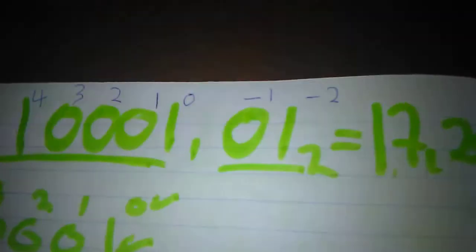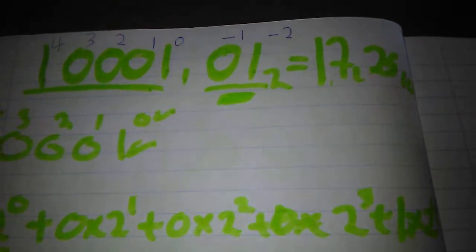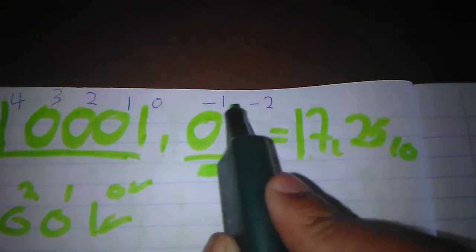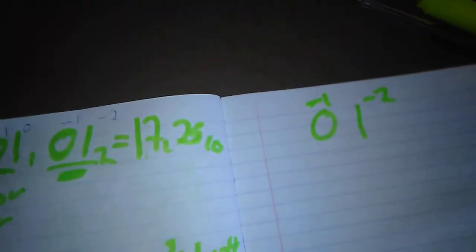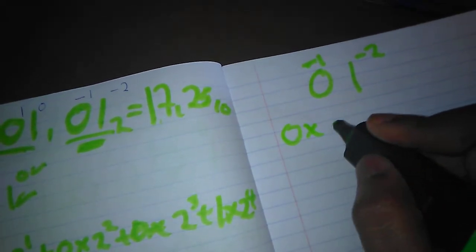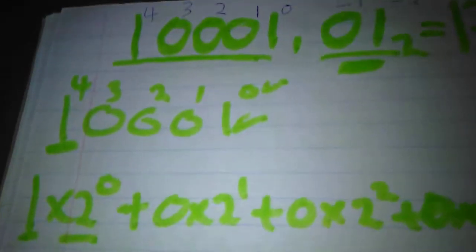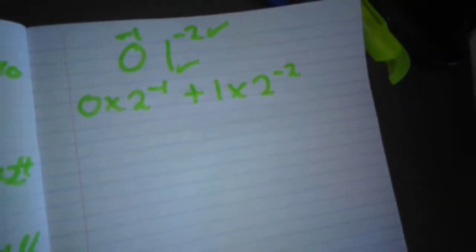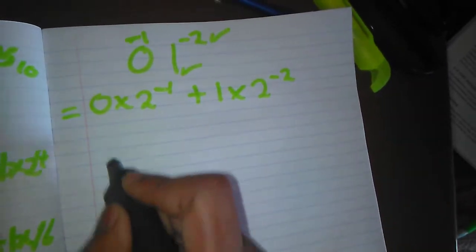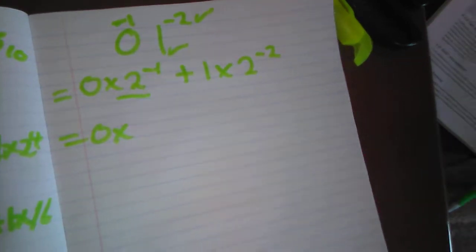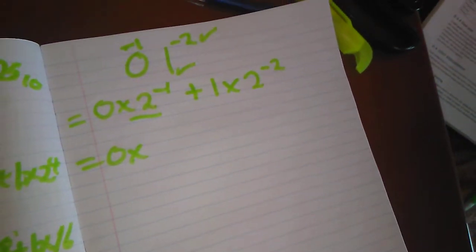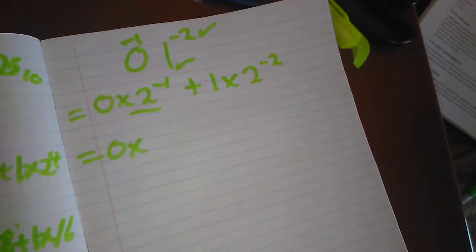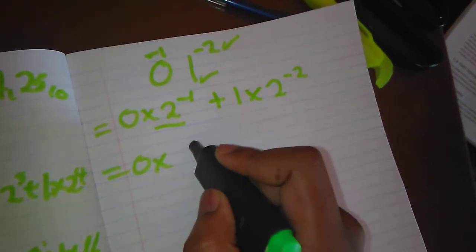Now we attempt to solve the right side after the comma, which is 0 1. As I mentioned, we give it exponents minus one and minus two — never forget these negative exponents because they are really important. So we write: zero multiply by two to the minus one, plus one multiply by two to the exponent minus two. The one corresponds to this bit and the two is its exponent position. Don't forget that these exponents are actually negative.